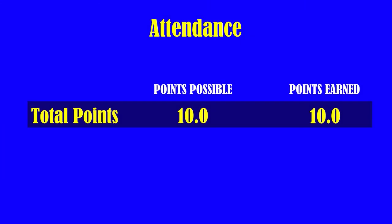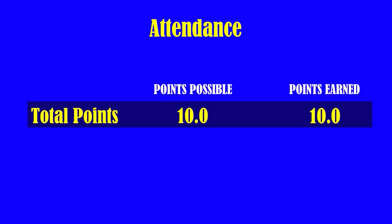An individual attendance rate is calculated for each student for the amount of time the student is enrolled in the school district. Each individual rate is weighted in accordance with the proportion of the school year the student is in attendance. A student has to have 90% or better attendance during their time of enrollment for us to earn a point for that student. Our district earned 10 out of 10 points for our overall attendance rate.